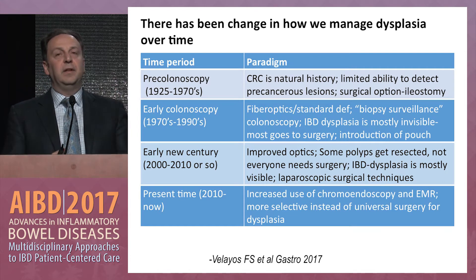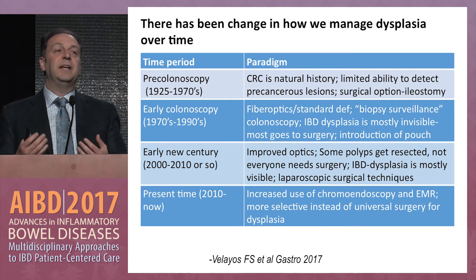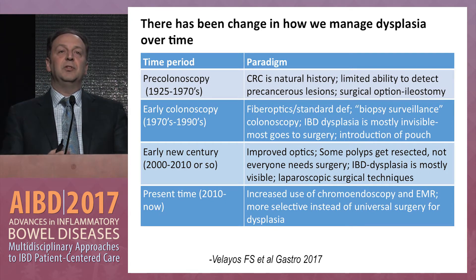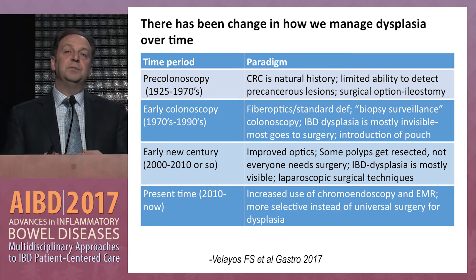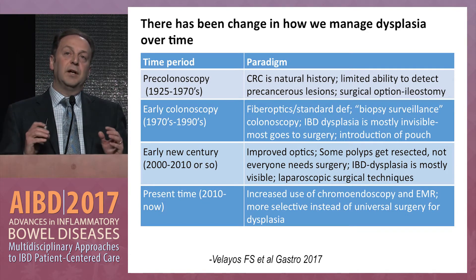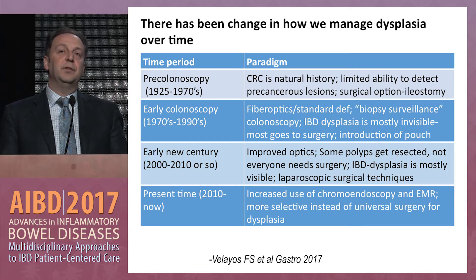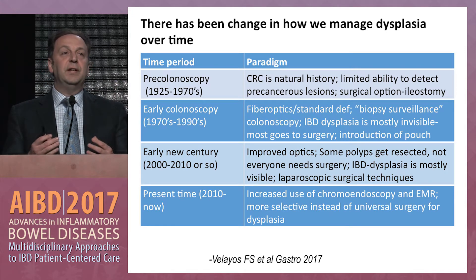Moving into the new century, we started talking about IBD and dysplasia similarly to everyday colonoscopy — taking out polyps. Studies came out showing that polyps can be removed and patients safely surveyed. High-definition scopes meant we could see more. More recently we started talking about chromoendoscopy, and as endoscopic mucosal resection became more prevalent, we started discussing whether you could resect a polyp.